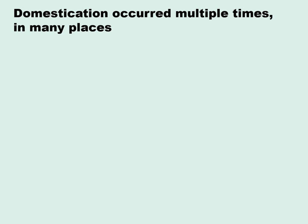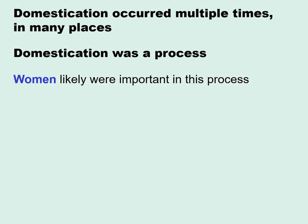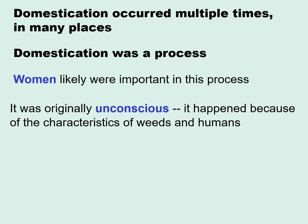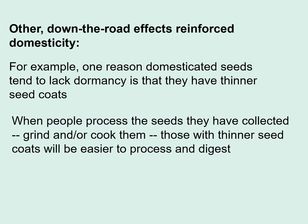Domestication occurred multiple times in many different places around the world. Domestication was a process, and women likely were important in this process. Originally it was an unconscious process — it happened because of the characteristics of humans and the characteristics of weeds and how the two interact. Other down-the-road effects reinforce domesticity: one reason domesticated seeds tend to lack dormancy is that they have thinner seed coats, so when people process seeds with thinner seed coats — grinding or cooking them — those with thinner seed coats will be easier to process, whereas those with thick seed coats might not be digested and pass through the gastrointestinal tract entirely.